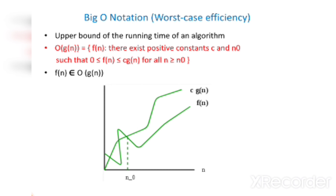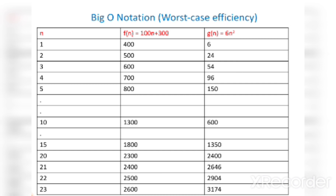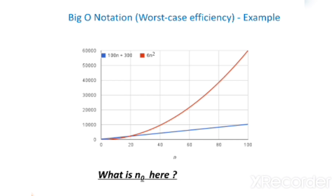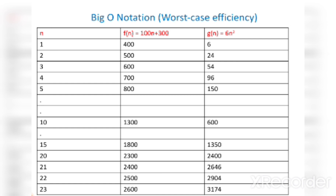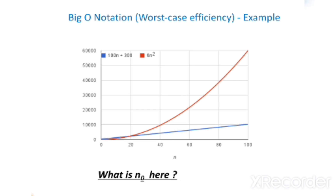In the graph, the upper line represents c·g(n) and the lower line represents f(n). The point where they join is called n₀. This is an example for Big O notation when n differs. For example, when n increases from 1 to 23, the function f(n) is given by 100n + 300 and g(n) = 6n². As n increases, f(n) and g(n) both increase as per their formulas. The graph shows f(n) = 100n + 300 and g(n) = n².